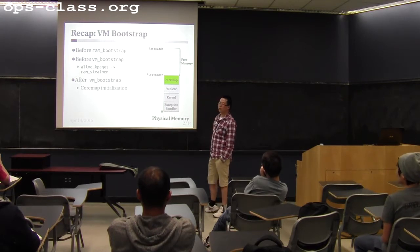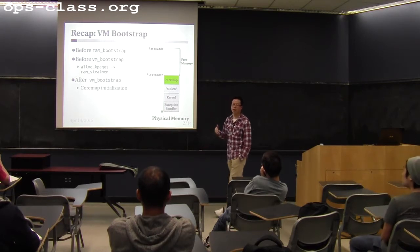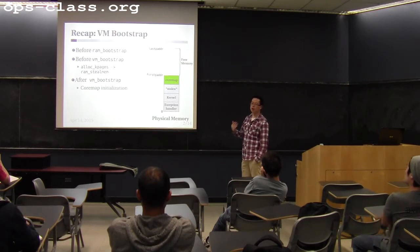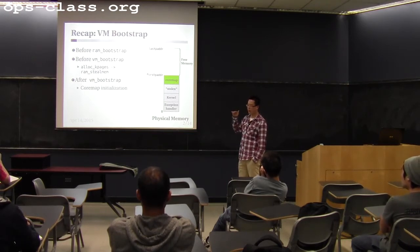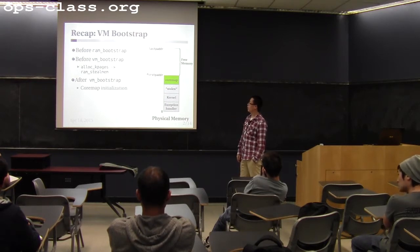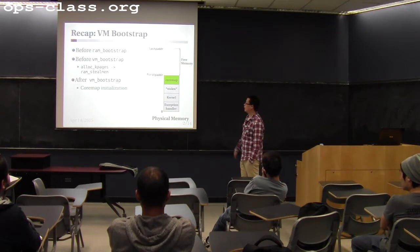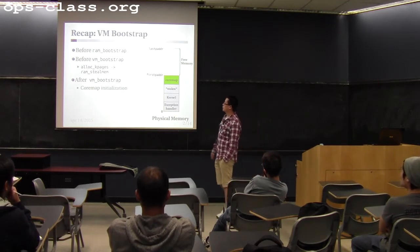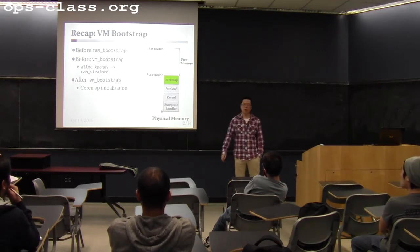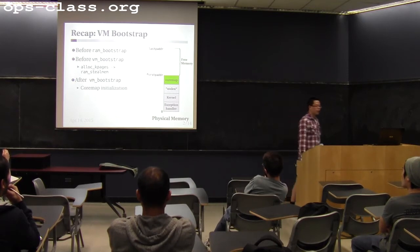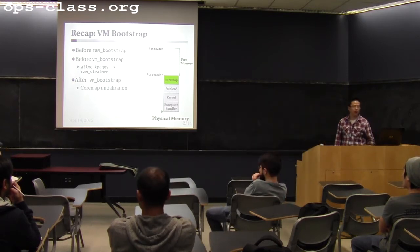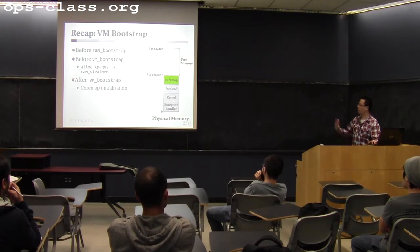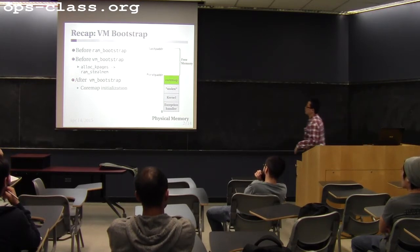Inside ram bootstrap you are supposed to initialize the coremap. After VM bootstrap, kmalloc requests should go to alloc_kpages, which should call your code to allocate the pages. Before VM bootstrap, alloc_kpages can just call rem_still_memory — that's okay. After VM bootstrap you should consult your coremap to do physical page allocation instead of just calling rem_still_memory.